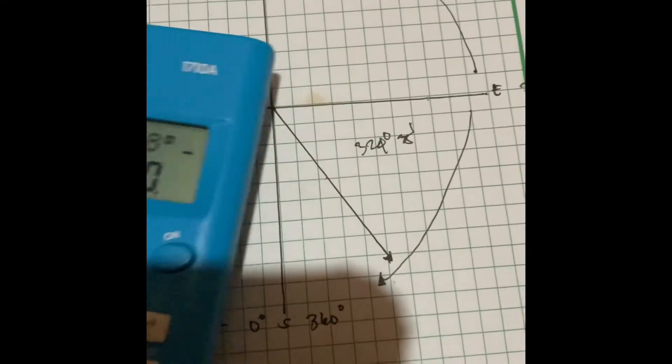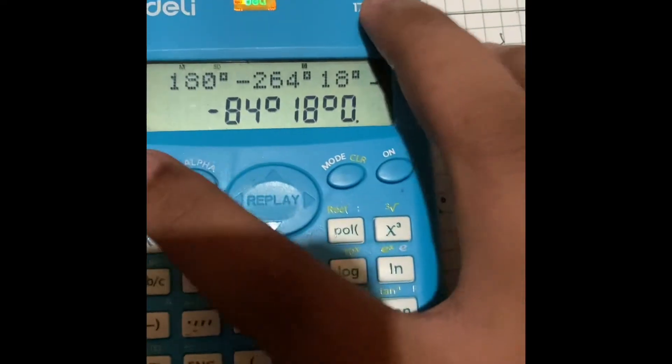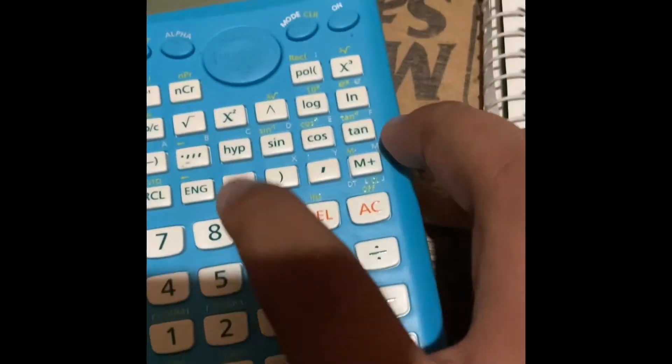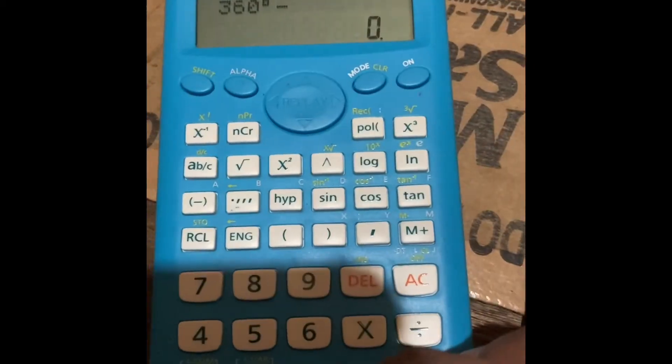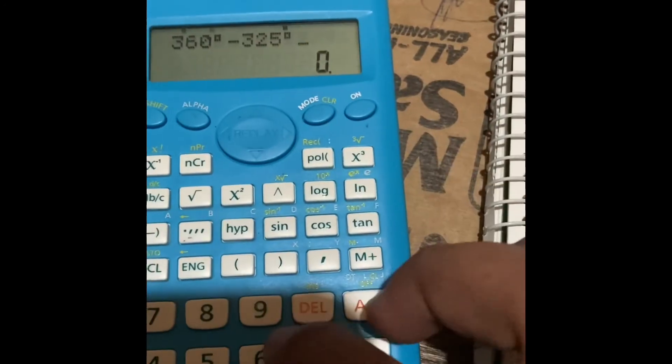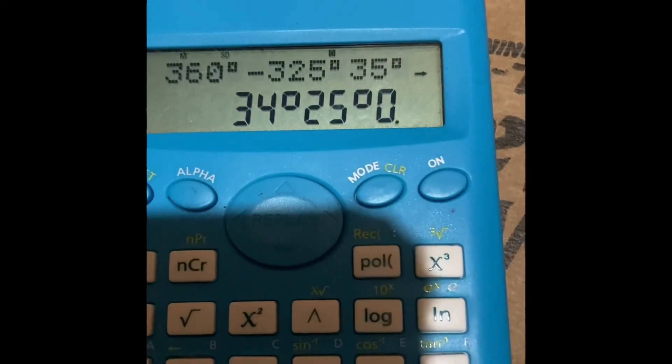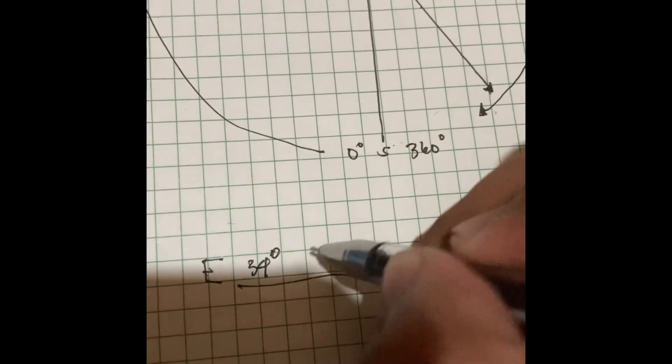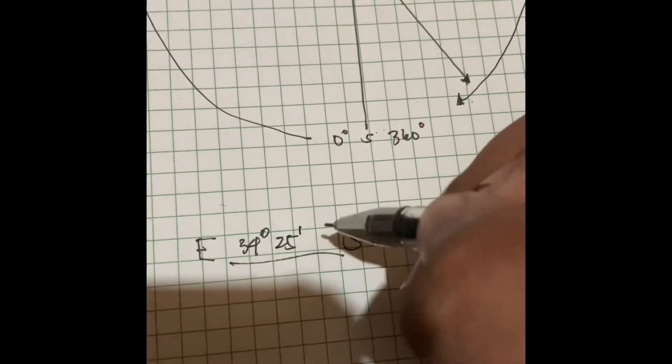We calculate from 360 degrees minus 325 degrees and 35 minutes, which equals 34 degrees and 25 minutes. So the bearing from east to south is 34 degrees and 25 minutes.